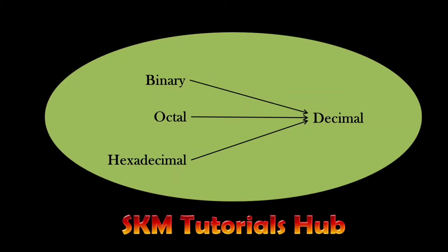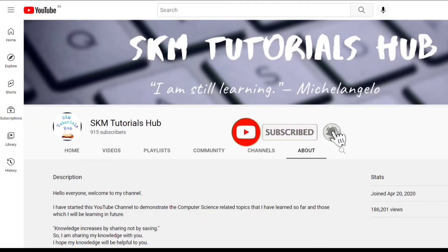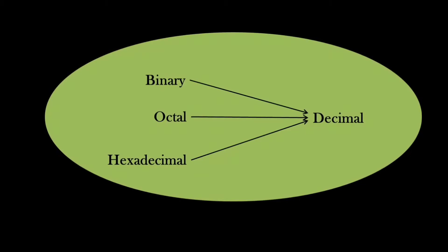Hey guys, welcome back to my channel SKM Tutorial. In the previous video of the number system series, you got a brief introduction about different types of number systems. In today's video I will show you how to convert numbers from different number systems into decimal number system with the help of examples. If you are new on this channel, hit the subscribe button and press the bell icon. I will start with binary, octal, and hexadecimal, and then show how to convert a number from any base to decimal.